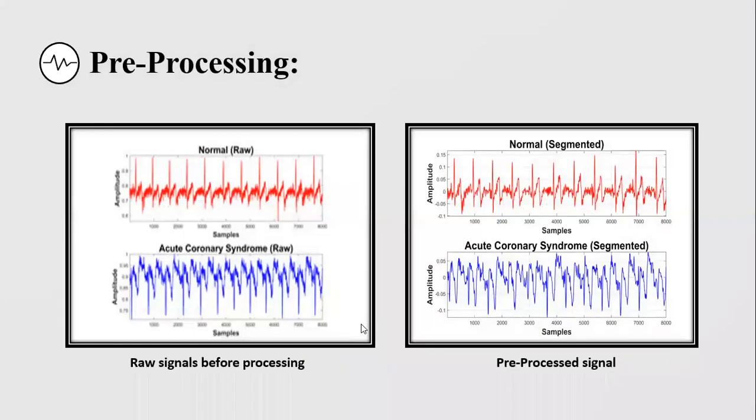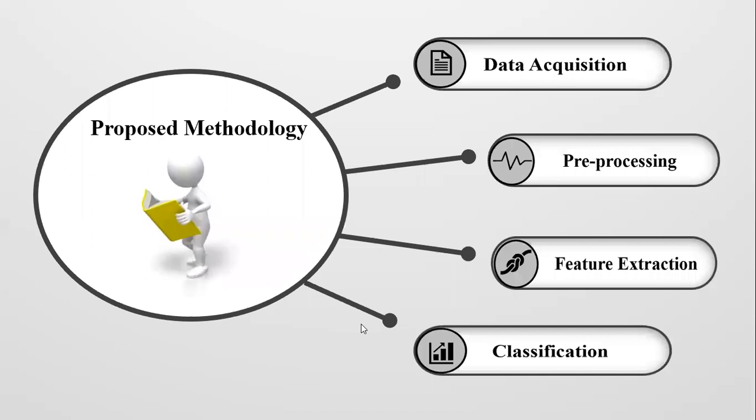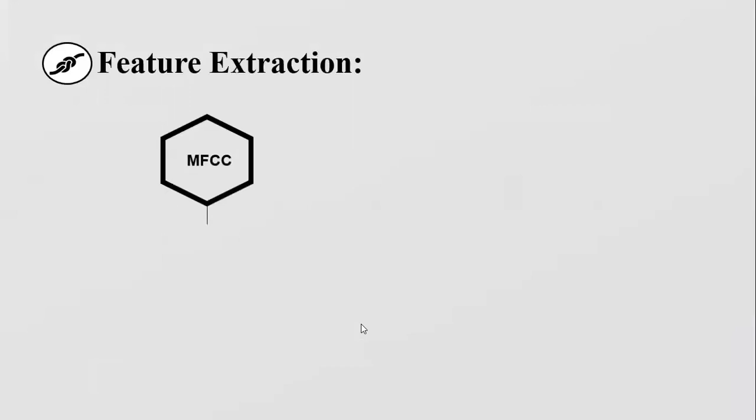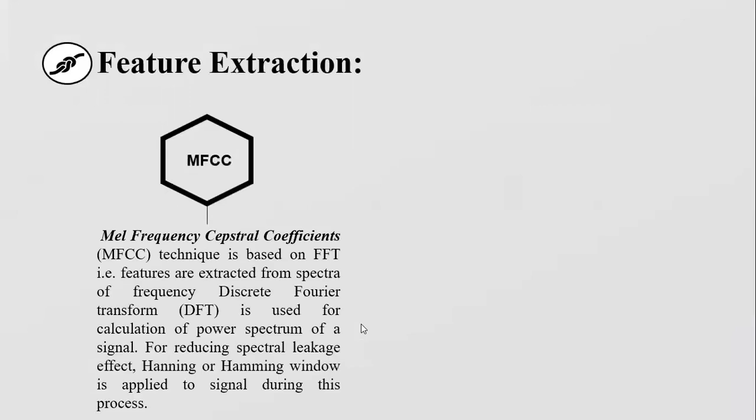Here are the normal and ACS signals with and without pre-processing. Now let's move towards feature extraction. Feature extraction is the most important stage in signal processing. Various statistical, time, and frequency domain features were applied during experimentation.